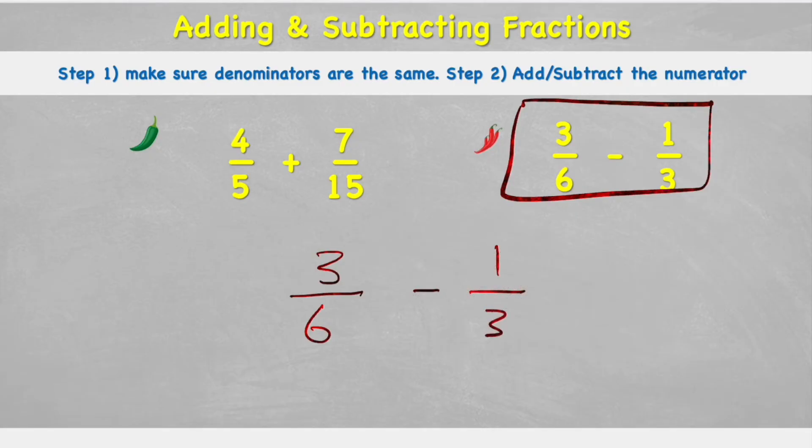So this time I have three sixths and I'm subtracting one third. Well, again, my denominators are different, which means I can't do this question without making them the same. But fortunately, I can see that three could become a six if I just multiplied by two. So now I have my new denominator over here. And because I've multiplied my denominator by two, I now need to multiply my numerator by two as well. And one times two is two.